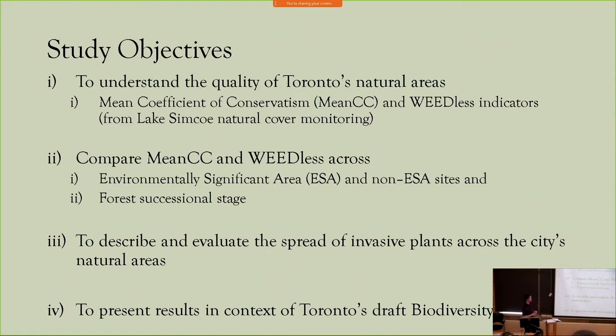In doing this, I will compare the mean coefficient of conservatism and weedless scores across areas that have been designated in Toronto as environmentally significant and areas that do not have that designation. We'll also do this across forest successional stage, look to describe the state of invasive plants across the city's natural areas, and finally briefly discuss the results in the context of Toronto's draft biodiversity strategy.